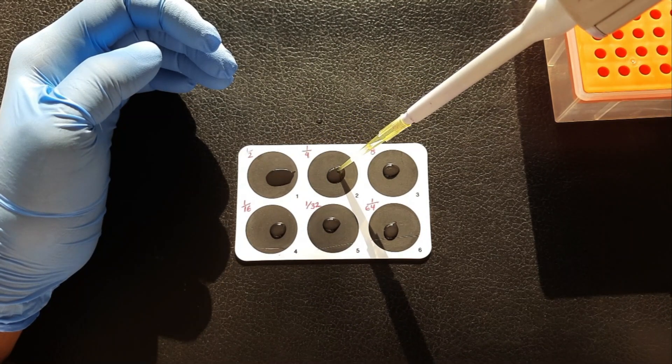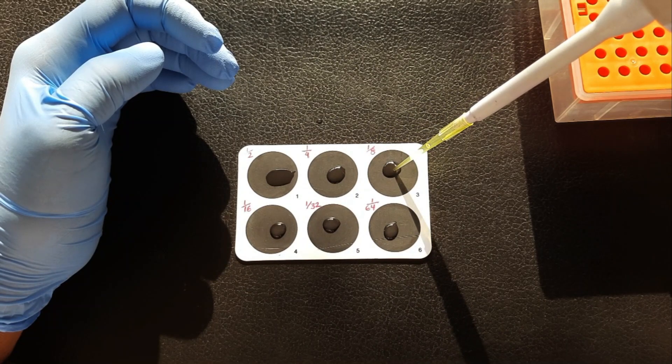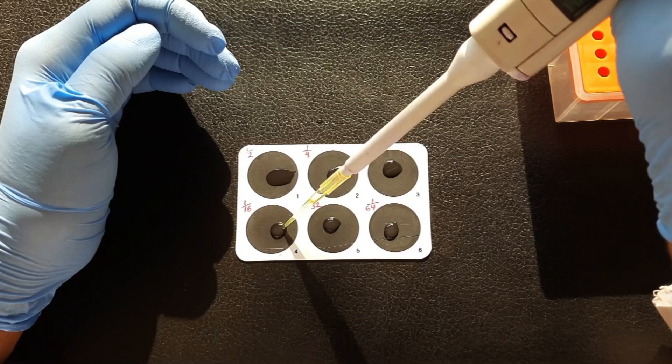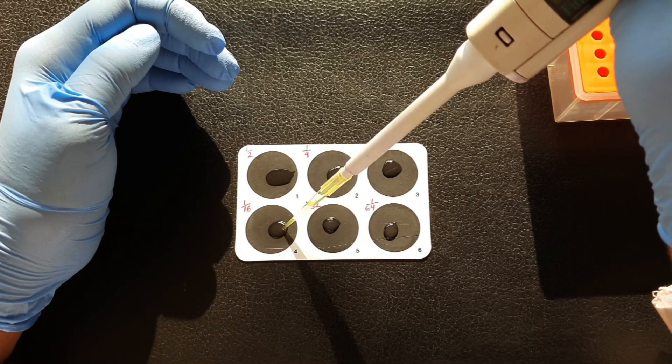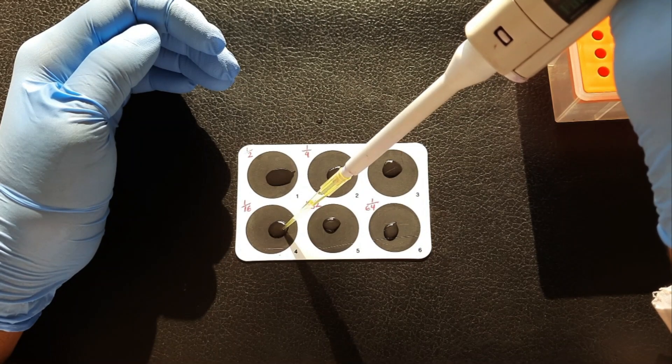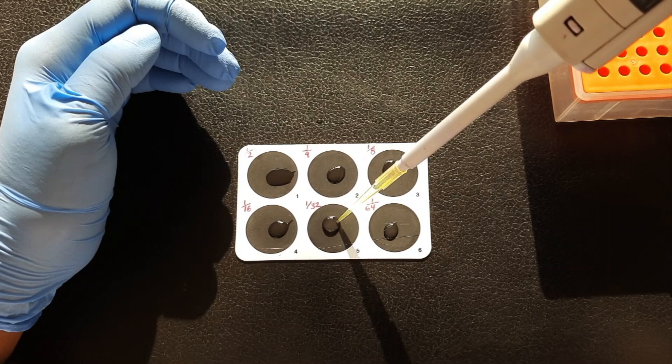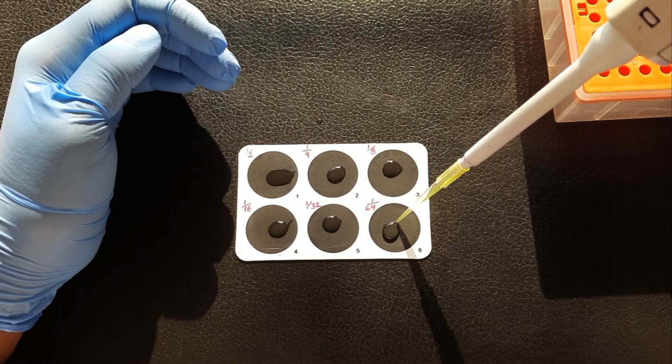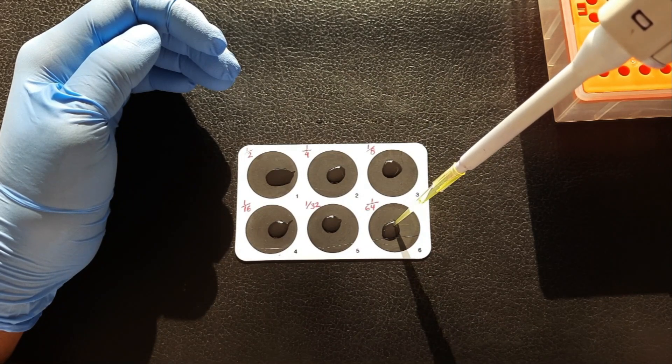Take 50 microliter from circle 2 and place it into circle 3, and mix. Take the same amount from circle 3, transfer to circle 4, mix. Again, take from circle 4, transfer into circle 5, mix. Again, take from circle 5, transfer into circle 6, mix.